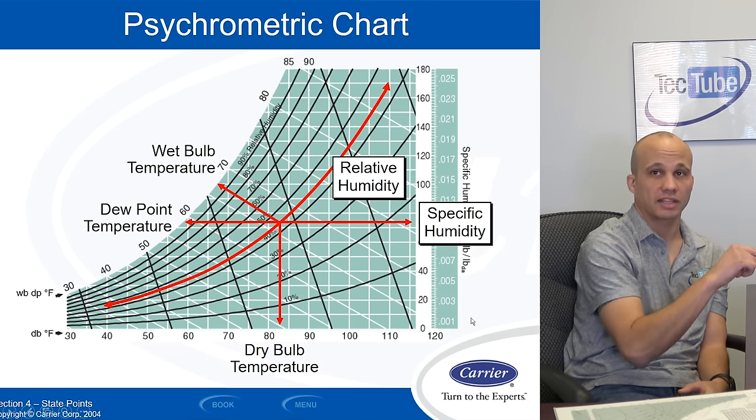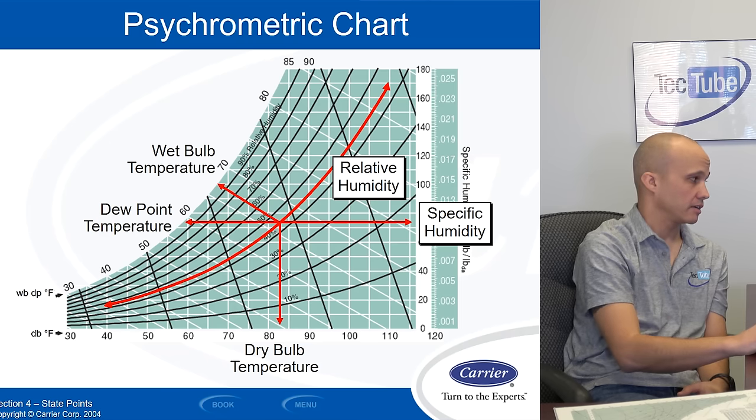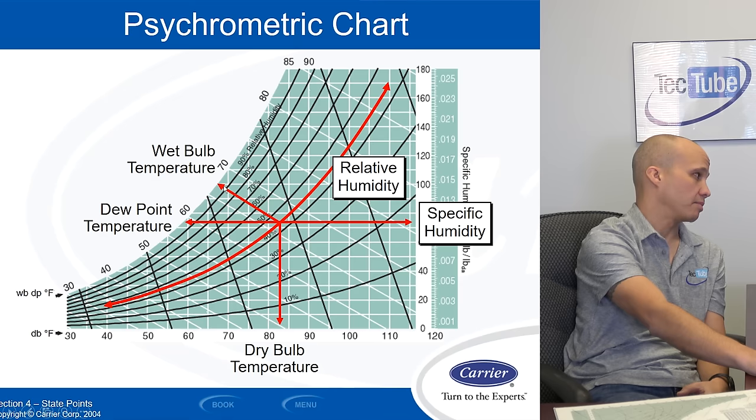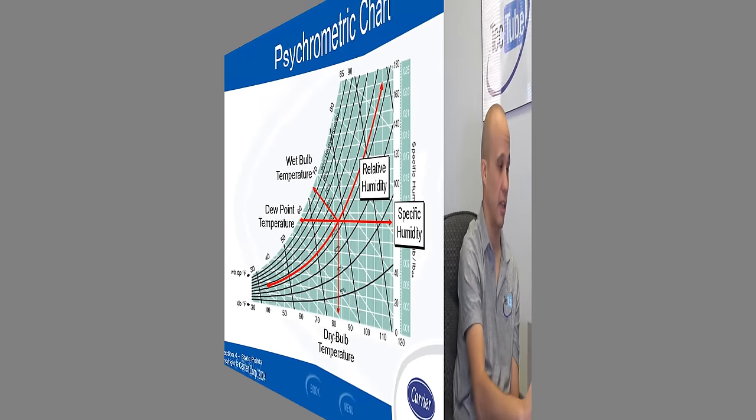So I can read any one of those five variables. If I know two of them, I can plot the point and get the other three from there. Because getting specific humidity is really hard to measure in the field. So I'm going to have to read probably wet bulb and dry bulb in the field and calculate the others from the chart.